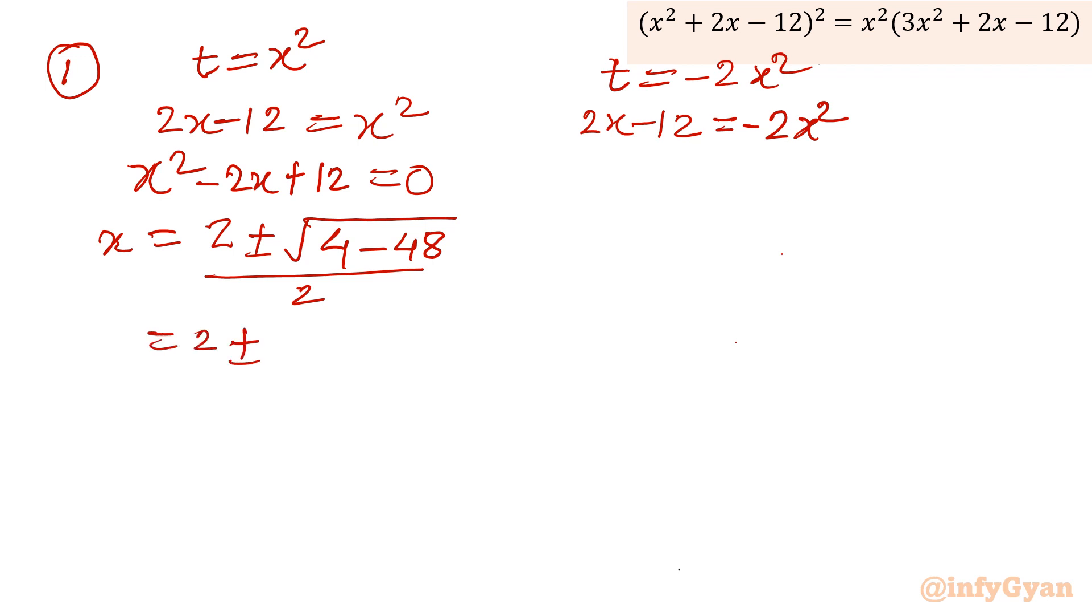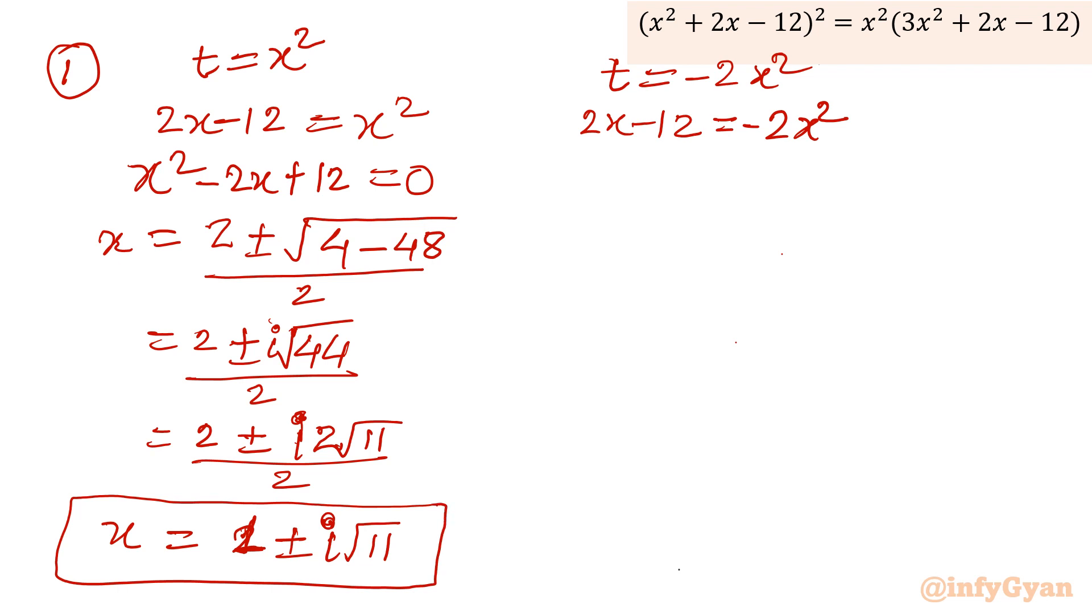2 plus minus, this will become, let me write i outside because it is negative, 44. We can write 2 plus minus i times 4 into 11. So 4 will come out as 2. So 2 root 11 over 2. So x will become 1 plus minus i root 11. So 2 complex solutions for the quartic equation, not quadratic equation. The equation is quadratic, but overall equation is quartic.